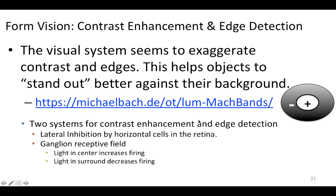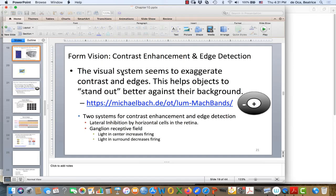So that's the first step in seeing an object — it gets mapped onto the cortex. From there, we need to be able to easily detect the object's edges. The visual system seems to actually exaggerate contrast and edges, which makes identifying an object much easier and helps it stand out better against the background.